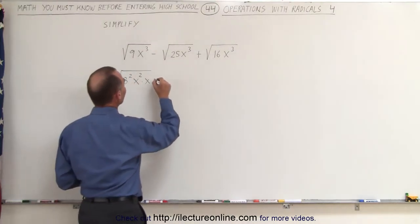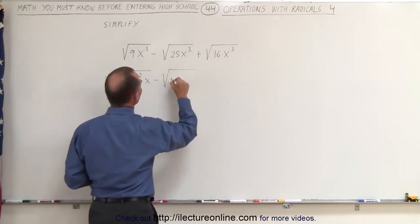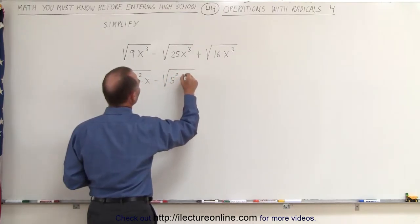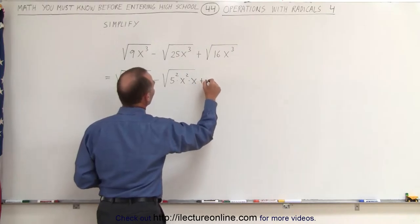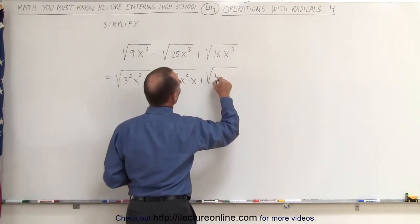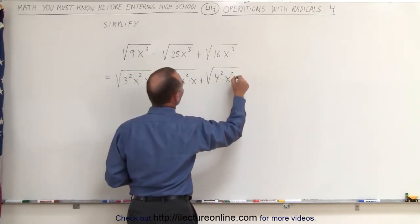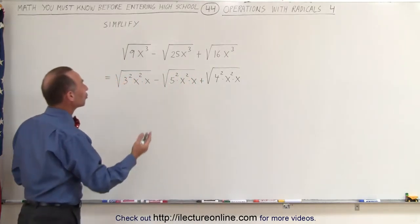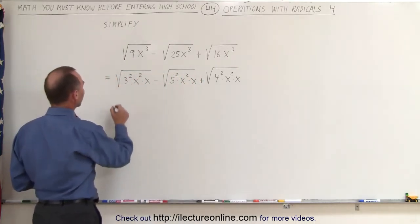Here we can write this as minus the square root of 5 squared times x squared times x, plus the square root of 4 squared times x squared times x. Now we can take whatever is squared outside the radical.